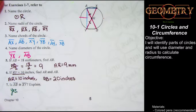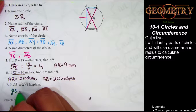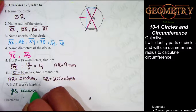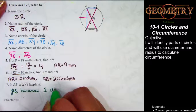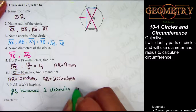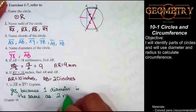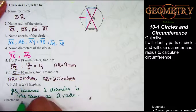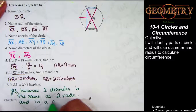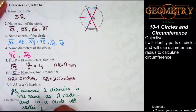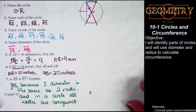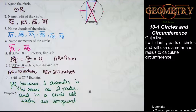So we need to write something to that effect: yes, because one diameter is the same as two radii, and in a circle all radii are congruent. Go ahead and pause the video now and look over your work, and when we come back we'll do the second half of the study guide for 10-1.